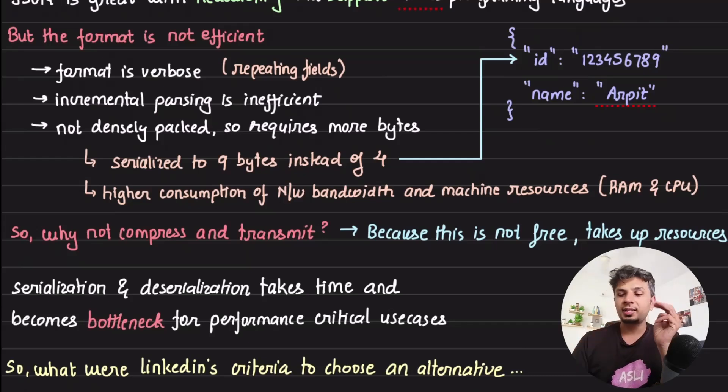Third, this format is not densely packed - it requires a lot of bytes to represent the data. For example, I'll give a very trivial example: let's say I have an integer, an id which is 123456789.